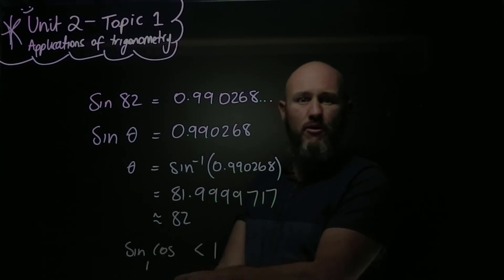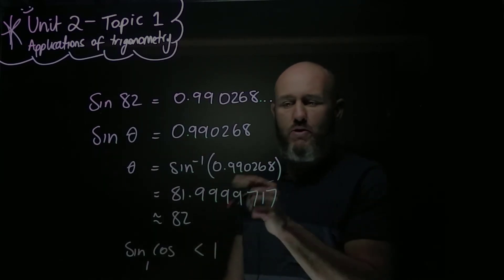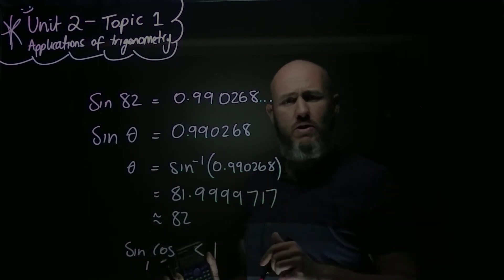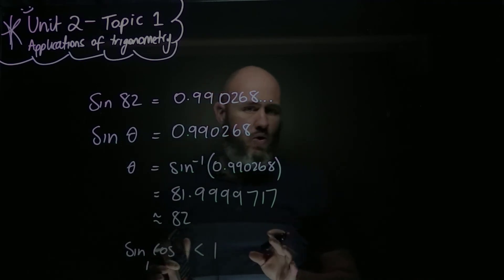Because if you do a sine inverse of 1.5, it's going to say there's a syntax error. And that's not because your calculator's broken, it's because you've used the wrong value here. Something's gone wrong in the question, and so you need to go back and have a look at that.